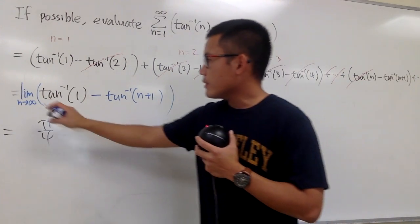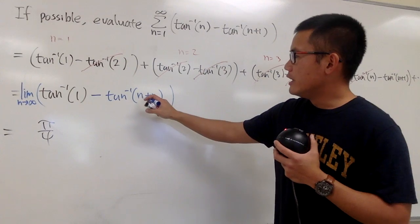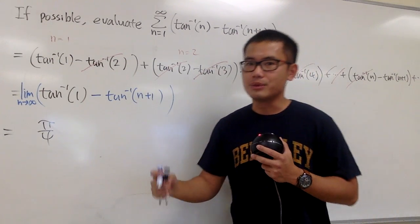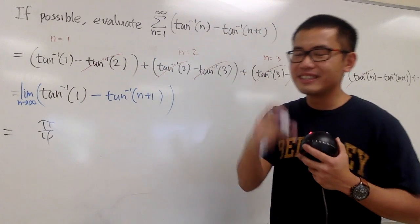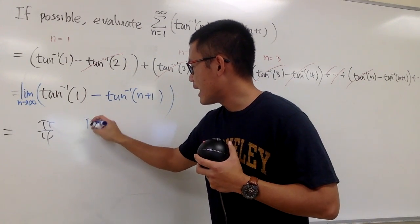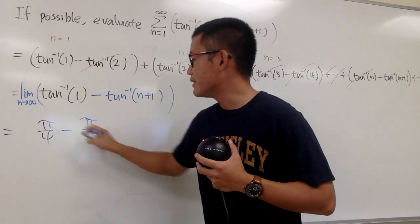When n goes to infinity, infinity plus 1 is still infinity. Inverse tangent of infinity is that horizontal horizontal, that limit, that pi over 2. So this right here is going to give us pi over 2. And that's a minus.